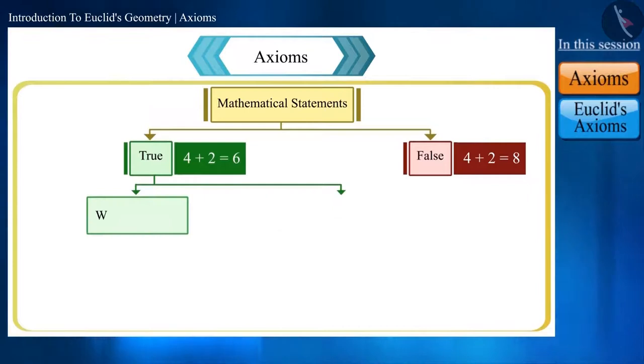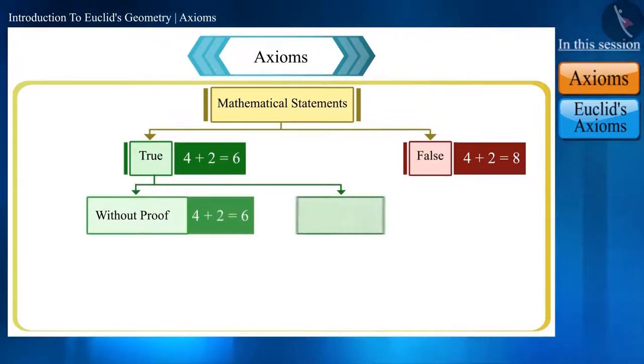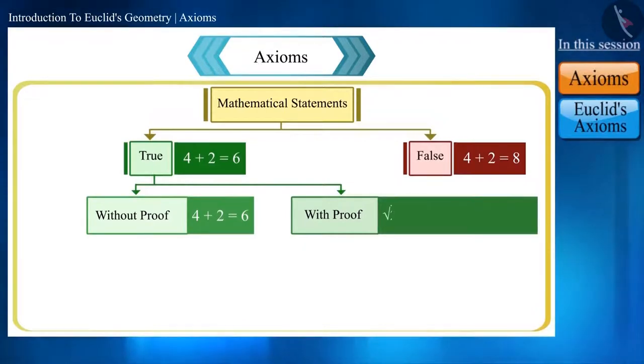There are also two classes of true statements: first, that is assumed to be true without proving - that is universal truths such as 4 plus 2 equals 6. And the second which is proved by evidence, for example square root of 2 is an irrational number.